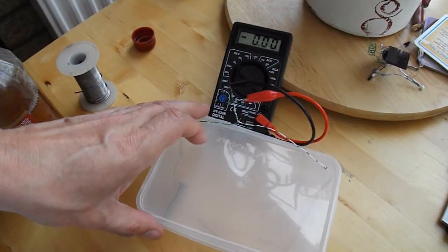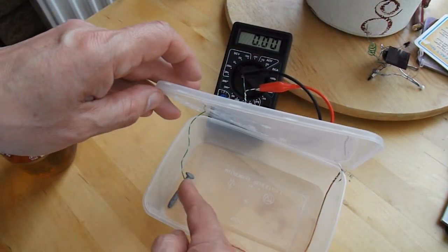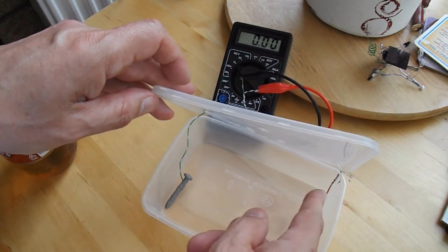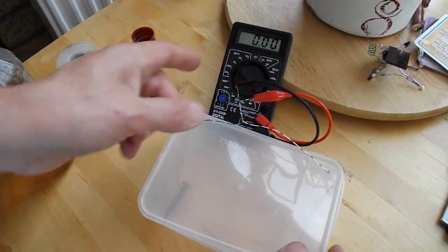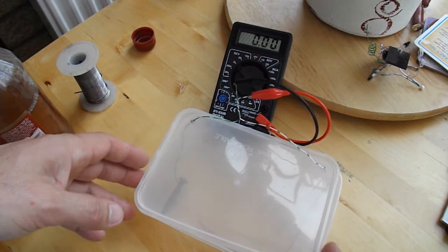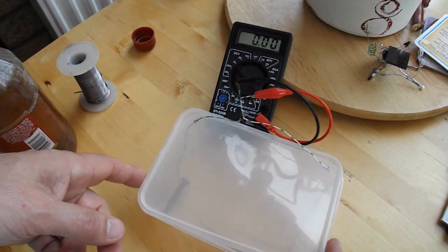Right, that's our wires connected to the zinc nail and the copper wire, and then connected up to the meter. There's no electrolyte in there yet, so we've got no current flow, no voltage.